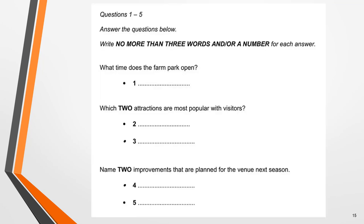It's now time for you to practice using this strategy on our sample question. The script I'm going to read out is a short promotional talk by a member of staff from a farm park attraction. Listen to it and identify the missing words. When you've completed the practice question, we'll go through the answers one at a time.